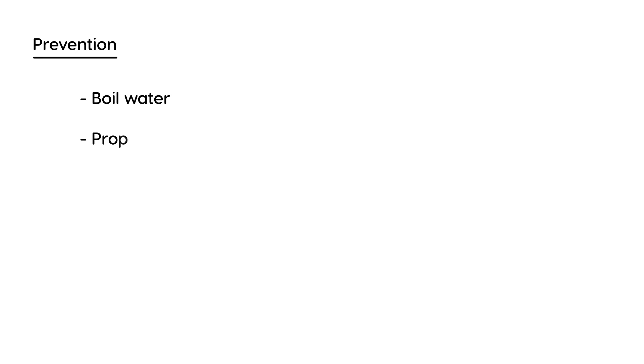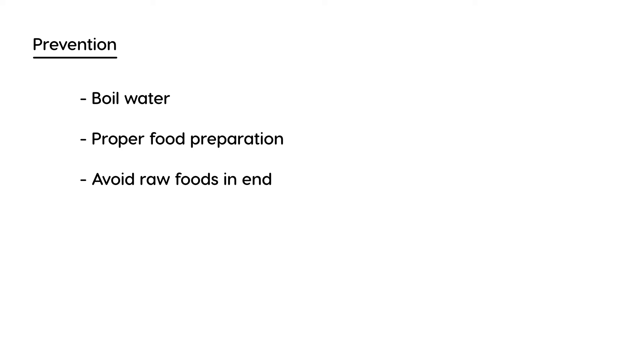Prevention is very important and it's so basic: things like boiling the water you drink or proper food preparation. For those traveling to endemic areas, be careful about what you eat. It's simple advice, but you would be surprised at how ill you can get if you eat the wrong things.